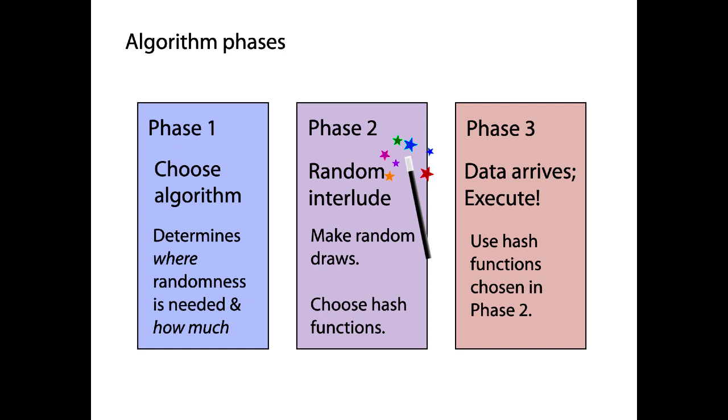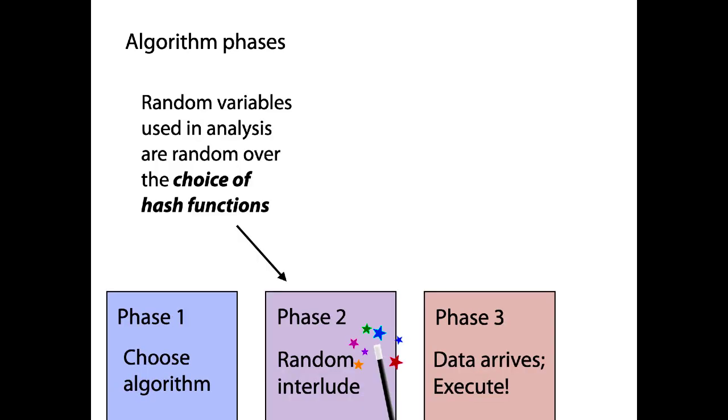So, if later we were going to analyze this algorithm using, say, random variables and maybe some of those approaches that we saw in the previous lectures, like coupon collector and birthday problem, well, those random variables are modeling a random system. And the randomness comes from, of course, this phase. So, the random variables that we can use in the analysis of the overall method are random over, essentially, the choice of hash functions. They're random over choice of hash functions. Which happens in phase two.